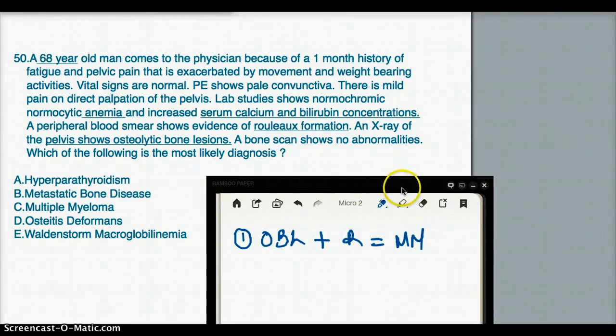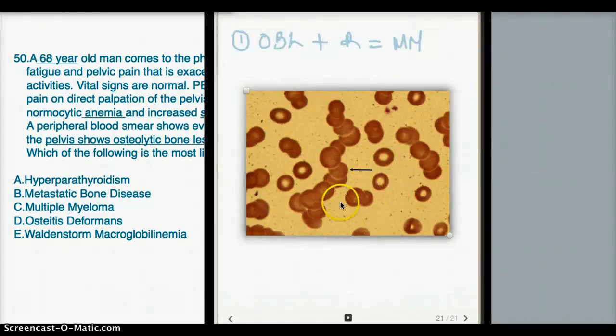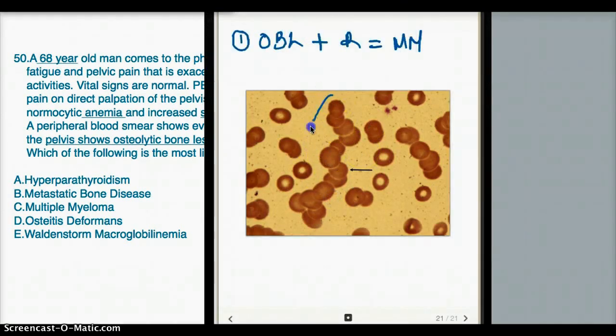First of all, I want to show you a picture of the rouleau formation. What does it really look like? So in this particular picture, we can see that the RBC kind of stacking on top of each other. This is a typical example of rouleau formation.